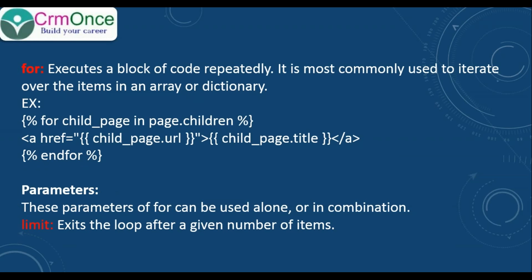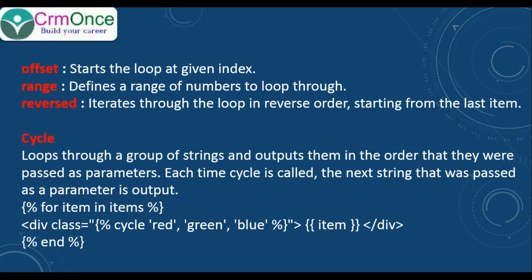If you give offset as five, after the fifth element it will start doing the for loop. The first five elements it will leave. Next, range - it defines the range of numbers for the for loops.